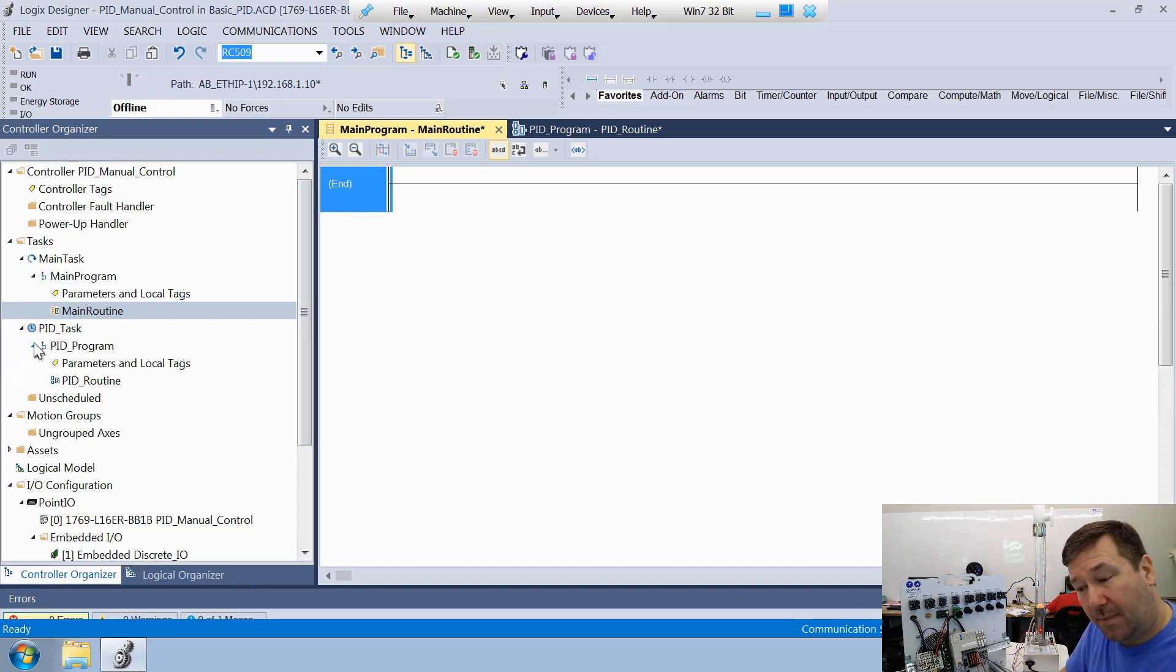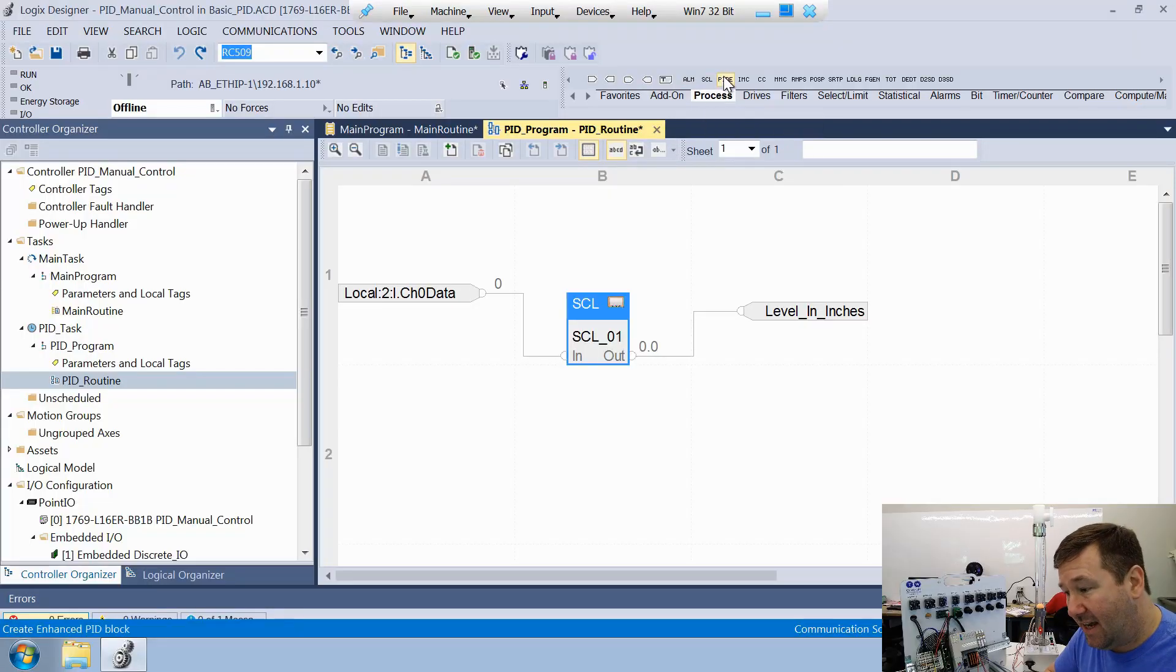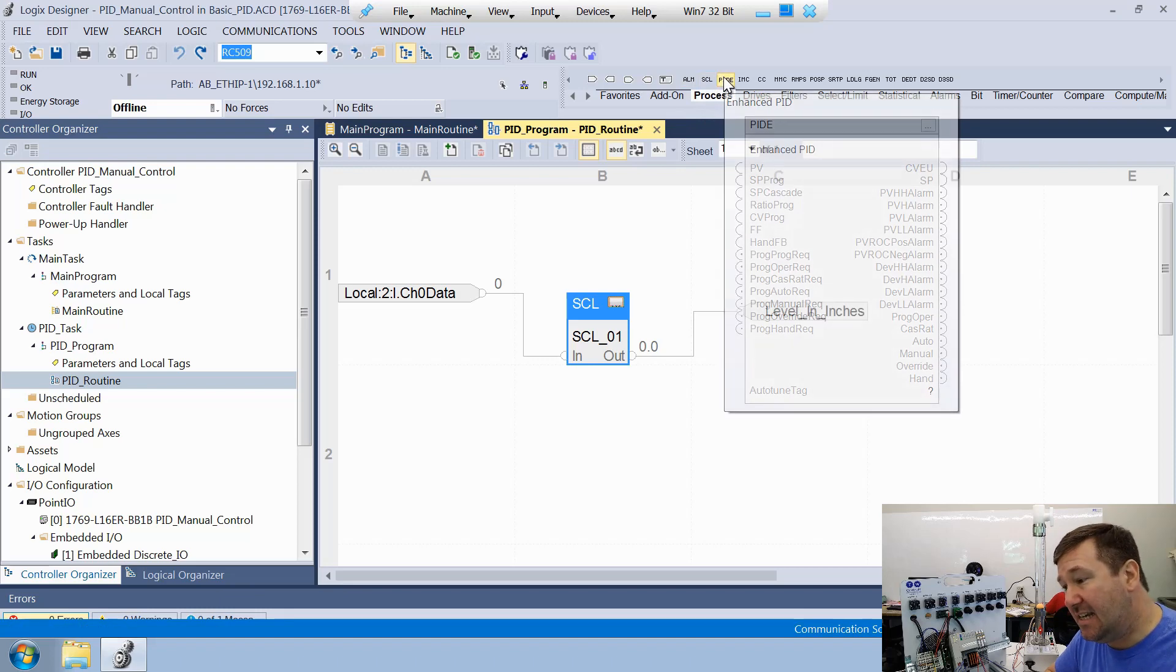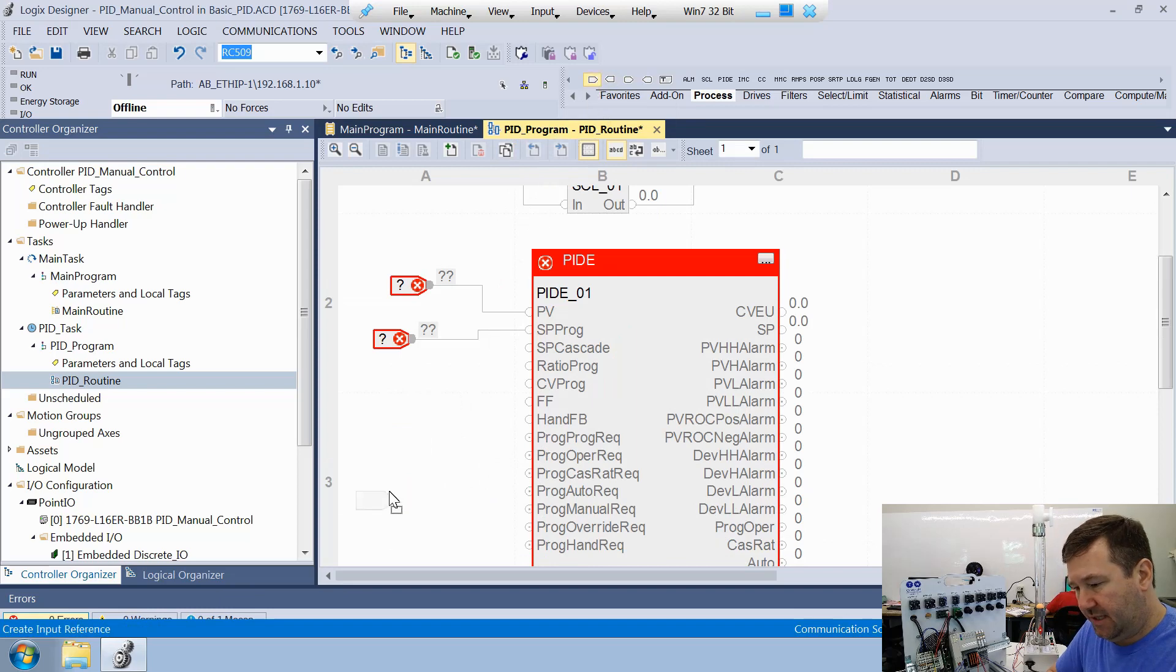And then let's go to our PID task, PID program, and PID routine. And this is where we had done our scaling for our analog input. Now on our process tab, we want to bring down that PIDE instruction, which is our enhanced PID. And then we're going to bring down some of the inputs here. So we're going to bring down an input reference for our process variable, an input reference for our set point variable. And actually for future videos, let's bring one down for our prog prog request and one more down for our prog auto request. And then on our output side, let's bring one down for our CVEU.